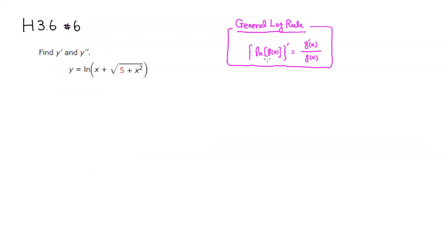So whenever you have a natural log of something and you want to take the derivative, all you have to do is put whatever is inside the natural log on the bottom — that's 1 over g of x — then by chain rule, multiply by g prime of x.